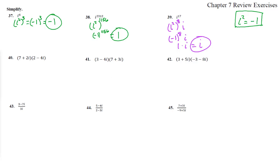Number 40. This is a binomial, complex number times complex number. We just do it like any binomial. We have 14 minus 28i plus 4i minus 8i squared.